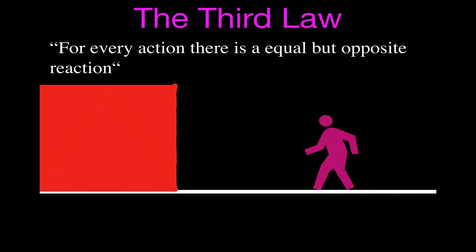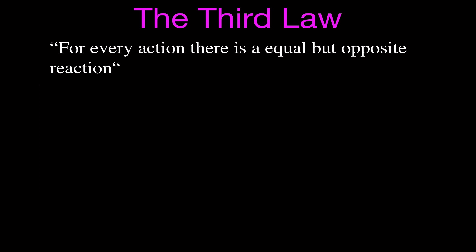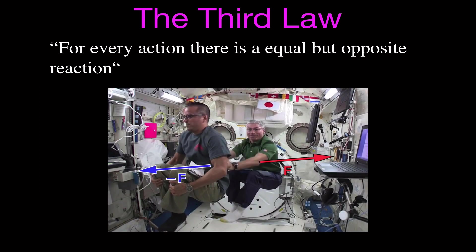Now we have Newton's third law. The third law is simply stated as: for every action, there is an opposite but equal reaction. An example often given is you have a person and a wall with a rope attached between them. The person pulls with a force of 40 Newtons, then the wall pulls back with a force of 40 Newtons. Those two forces are equal in magnitude but opposite in direction.